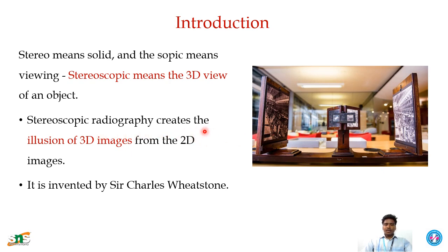Stereoscopic radiography creates the illusion of a 3D image from 2D images. A set of two images is obtained and placed in the stereo Wheatstone stereoscope, which produces the illusion of a 3D image. This technique was invented by Sir Charles Wheatstone, which is why the stereoscope is called the Wheatstone stereoscope.